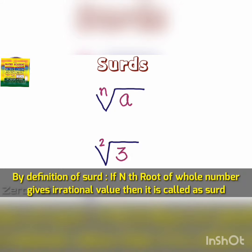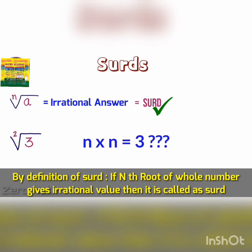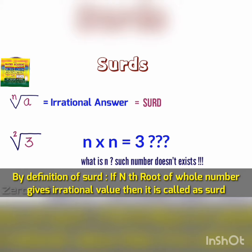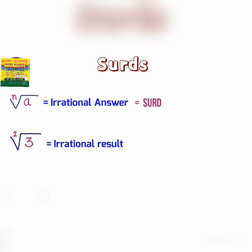By definition of the surd, if the nth root of a whole number gives an irrational value as an answer, then it is called as a surd. For example, square root of 3 — can you tell me any two numbers which when multiplied with each other give the answer as 3? The answer is such a number does not exist, hence the answer we get is irrational.